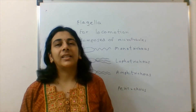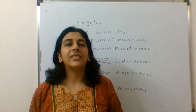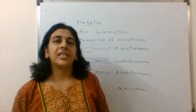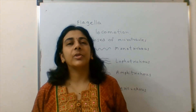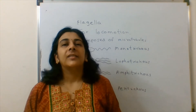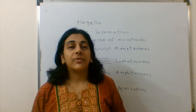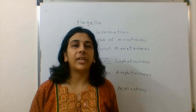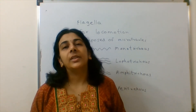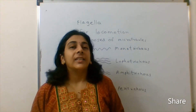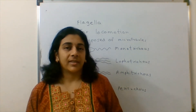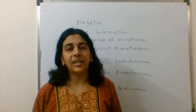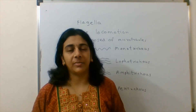We will have a discussion about bacterial flagella first and then we will solve the question. Flagella is one of the portions of the bacterial cell and it is there for locomotion. The bacteria can move from one place to another with the help of flagella. These flagella are made up of microtubules and show a whip-like motion, so that bacteria can move from one place to another.